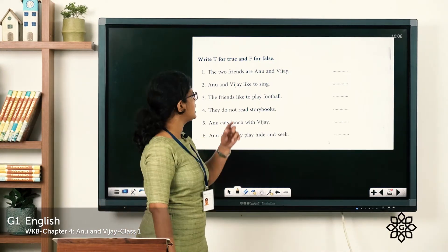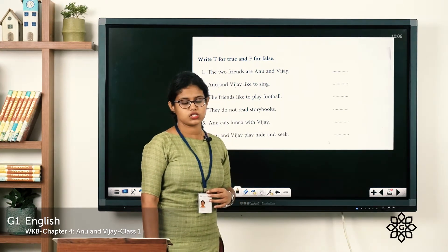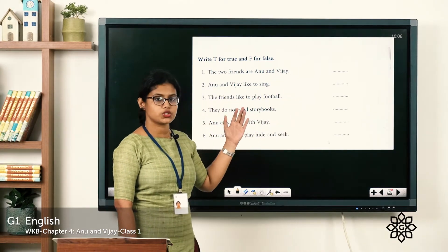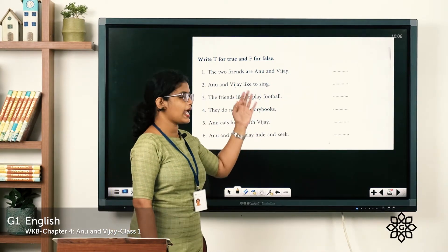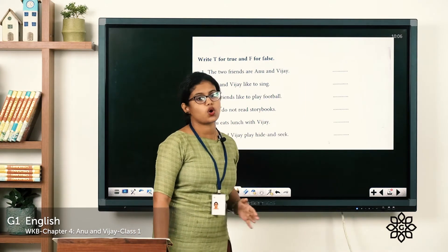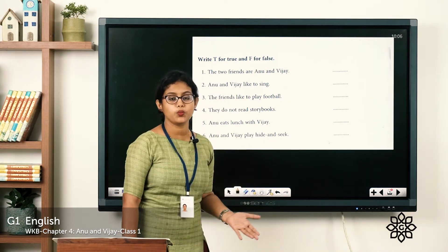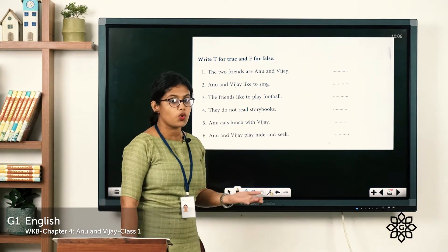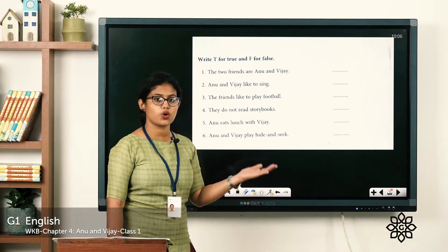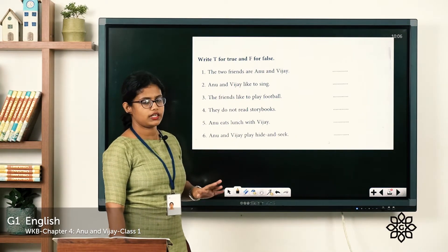Let's read the first question. Write T for true and F for false. For statements which are true, you have to write T, and for statements which are false, you have to write F. I'll read out the question and you can write the answer in the space. First one: 'The two friends are Anu and Vijay.' If the statement is true, write T; if false, write F. You can write the answer here. Next: 'Anu and Vijay like to sing.'